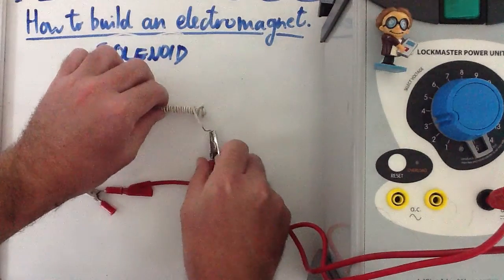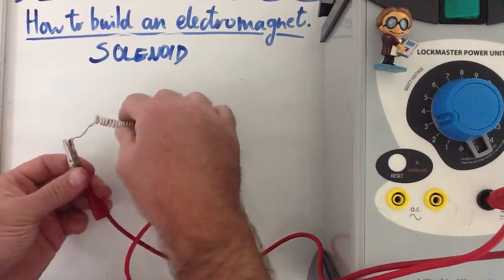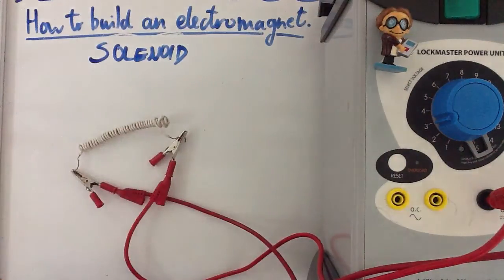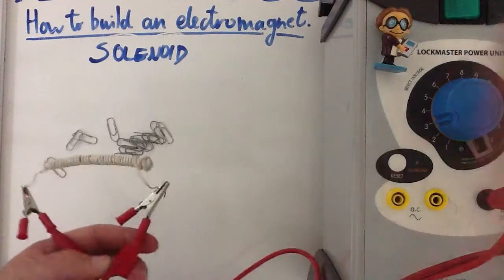So when I pass an electrical current through this insulated wire, you can do this with a double A battery and a bit of wire, you will create a magnetic field which should enable you to pick up a magnetic material.